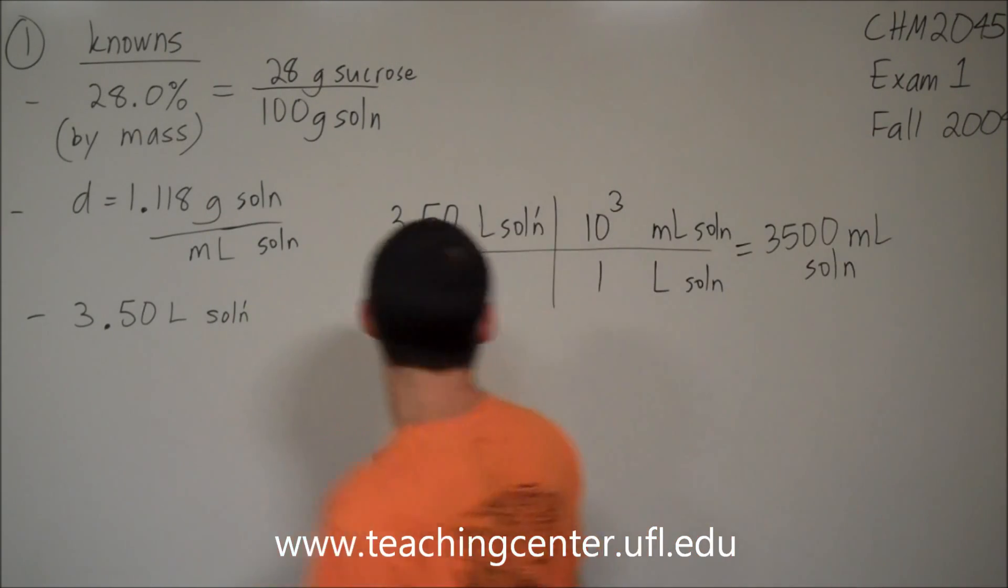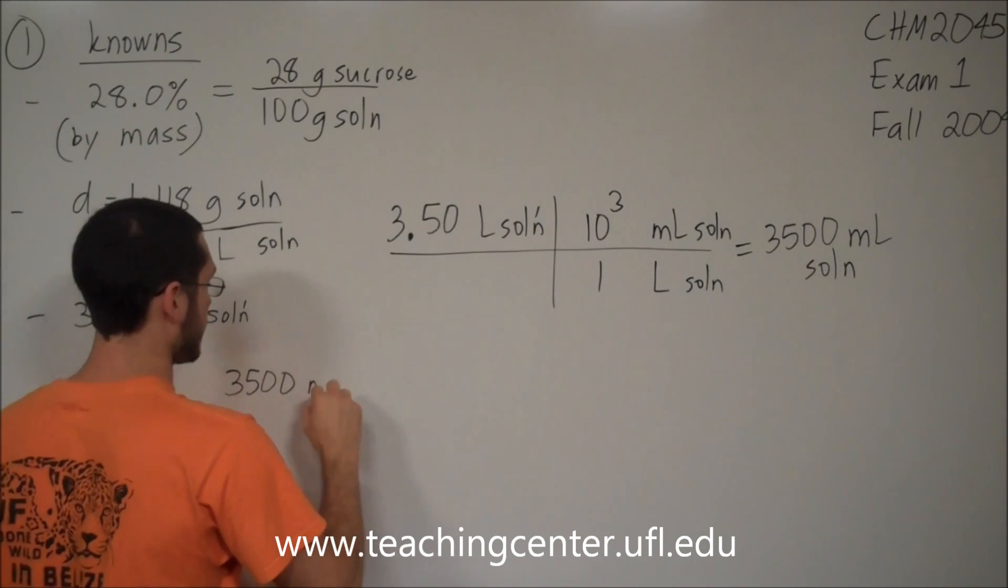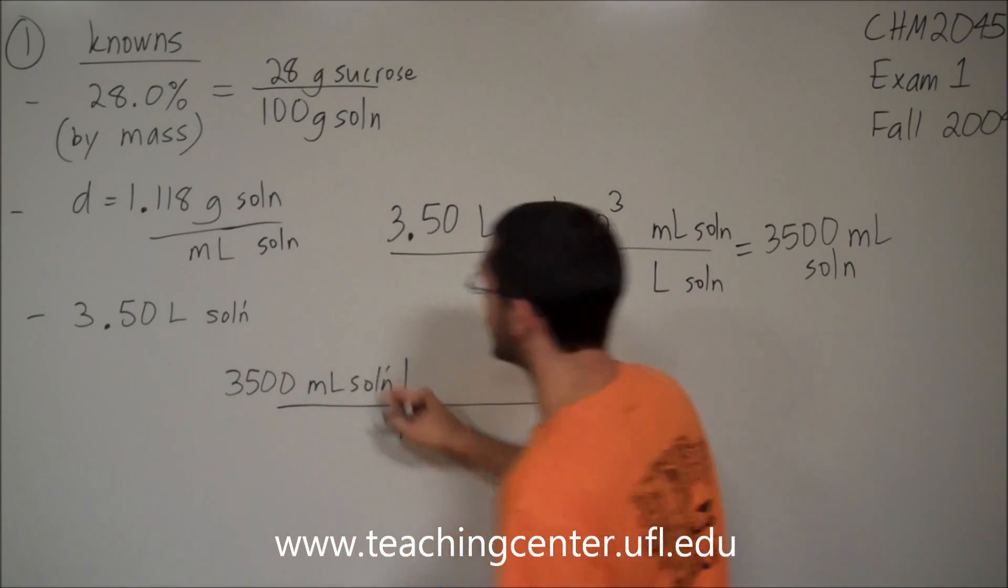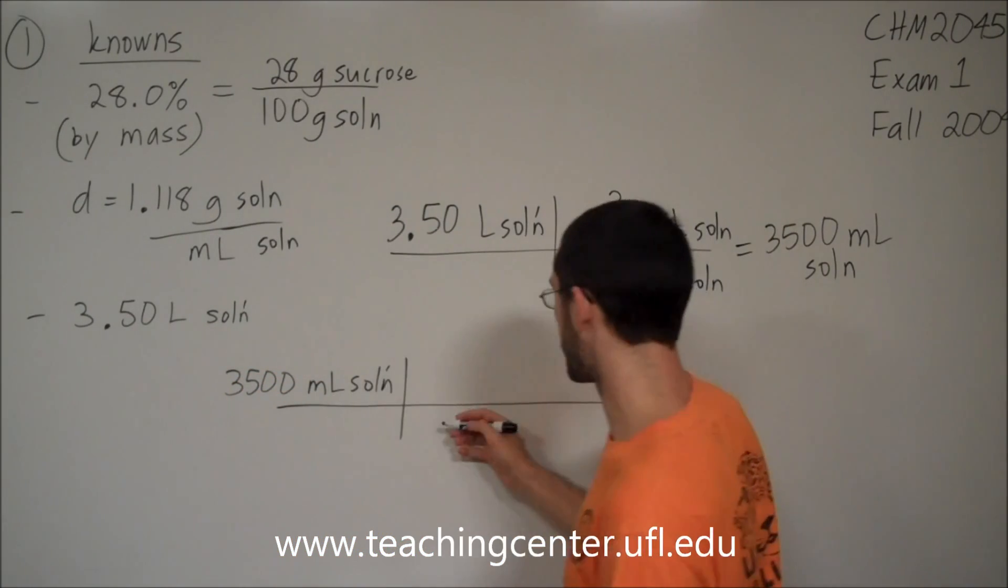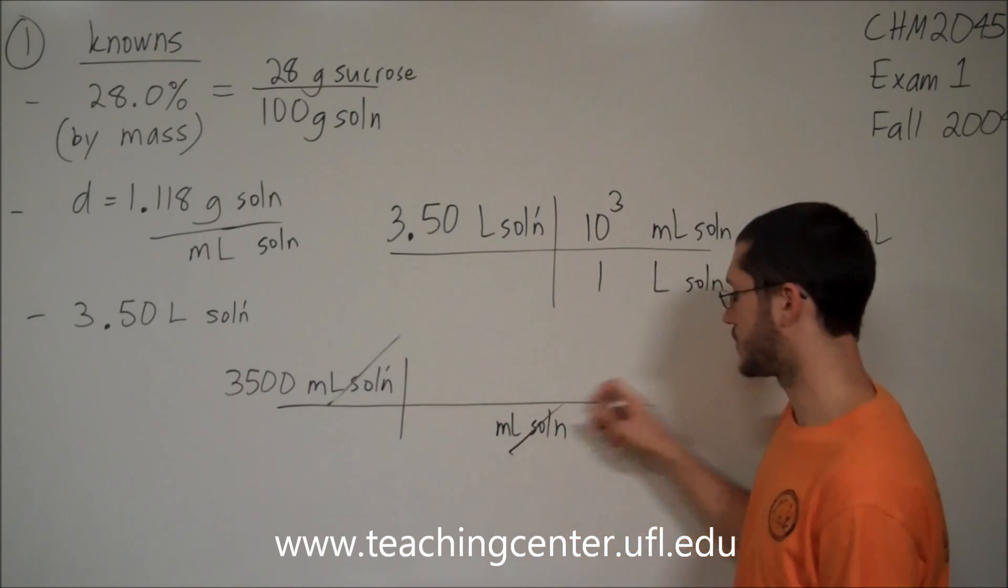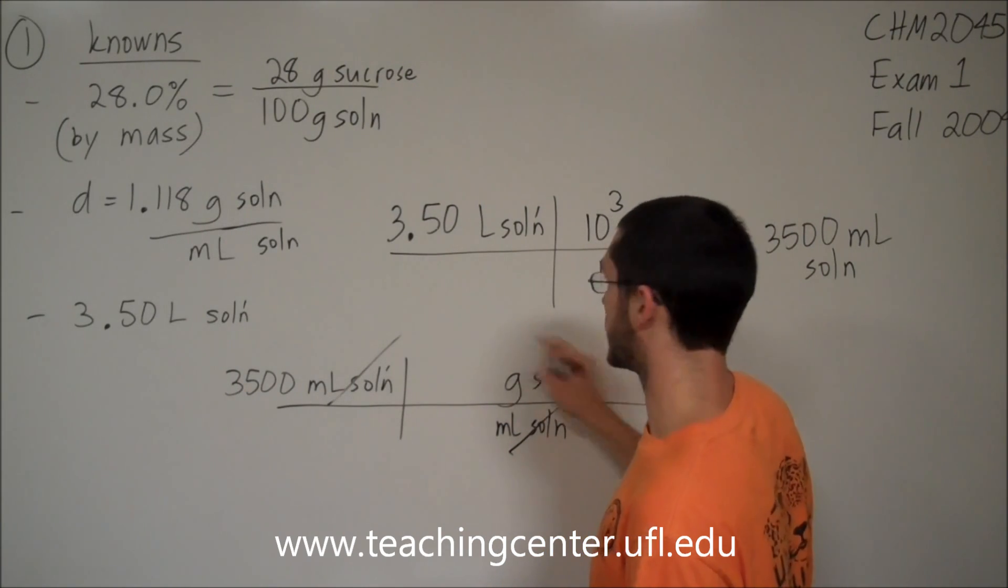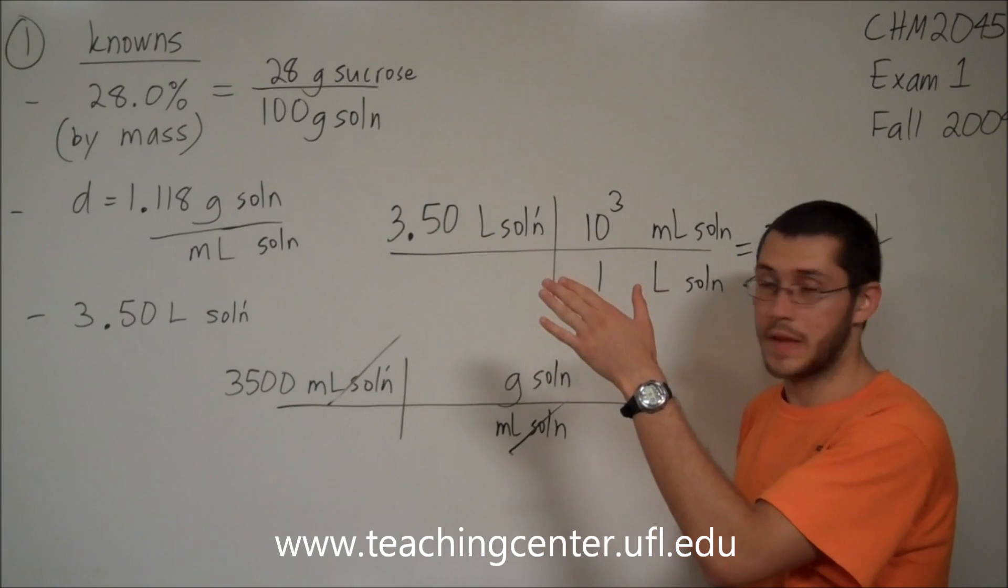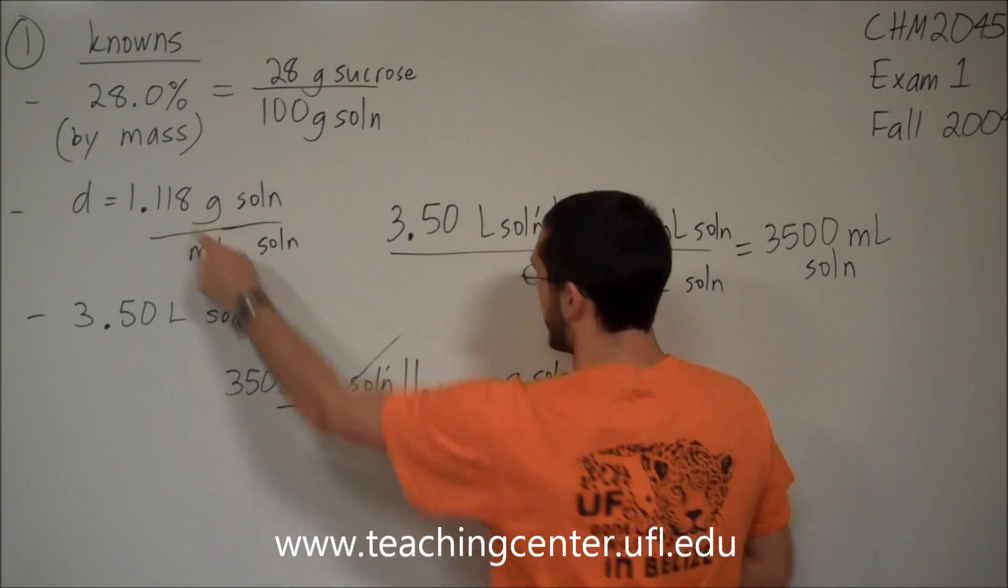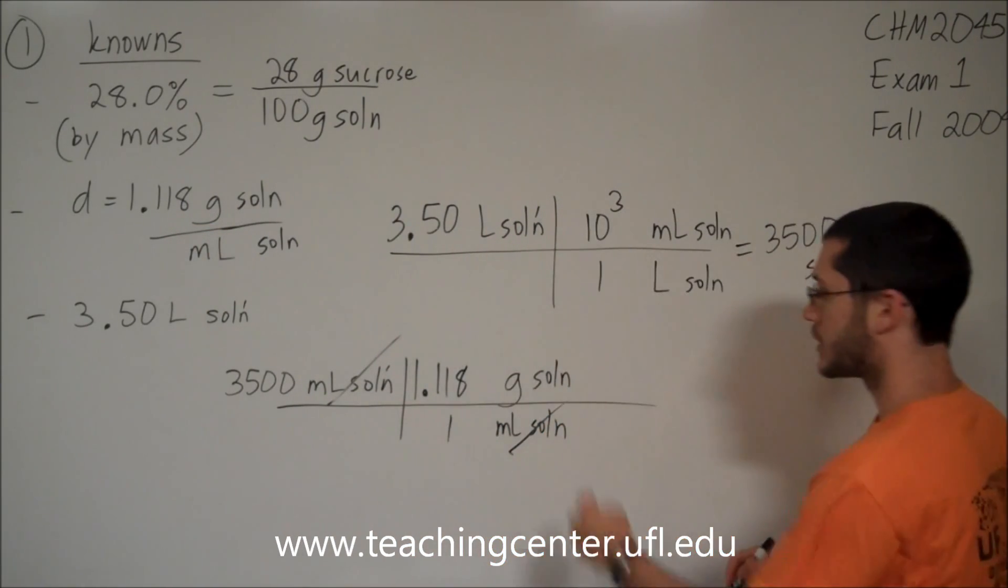Now I can take that number, 3,500 mils solution, and use this conversion factor, the density, to go from my mils of solution so that my units cancel. And I'm going to put grams up top because I'm using this conversion factor. Put the numbers in their correct spots. Be sure to put the units with their right numbers. Good. So now I'm at grams of solution.